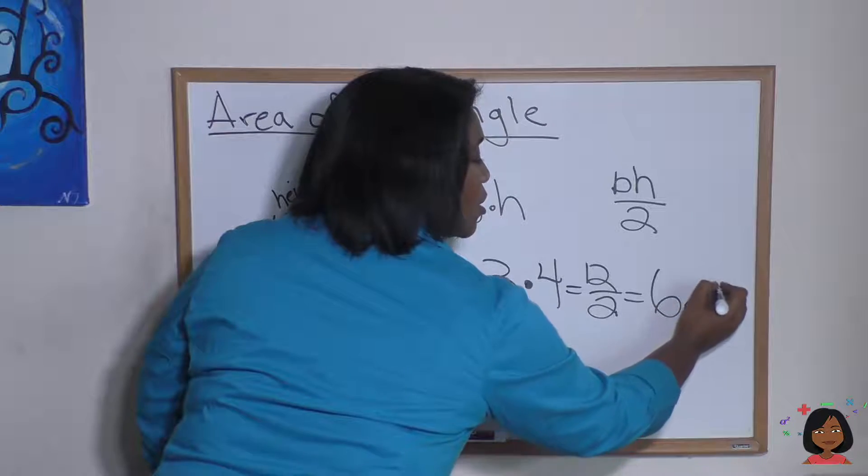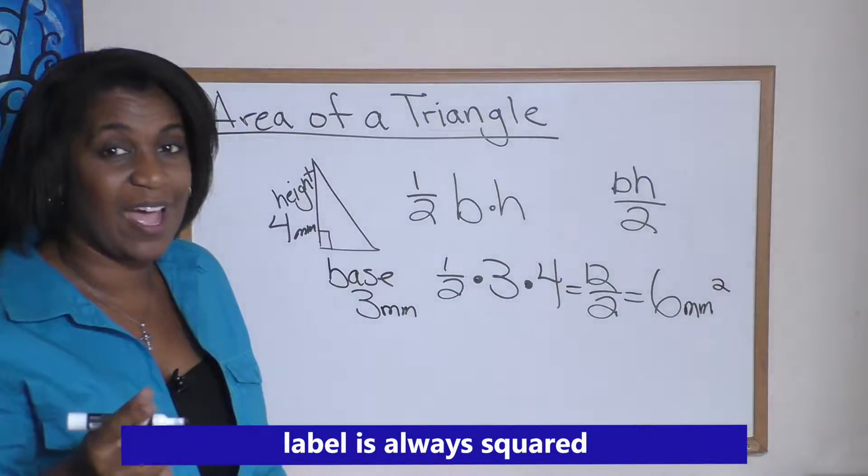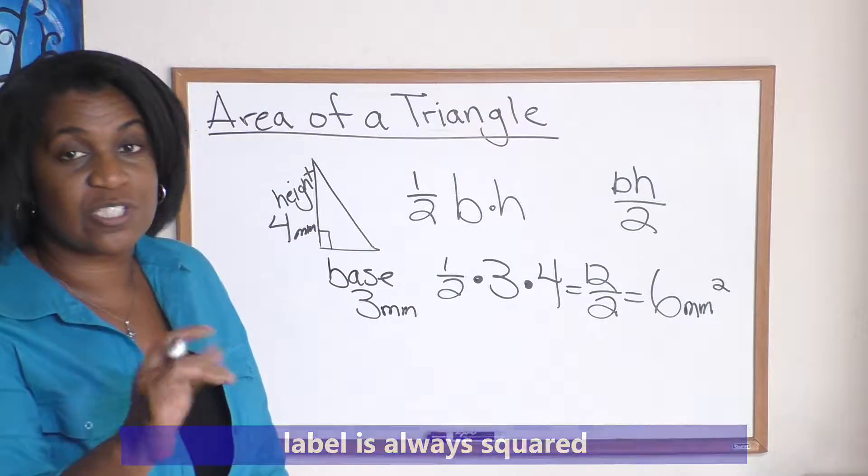So let me give you, I meant to tell you these were millimeters, so that means that our label is going to be millimeters squared. Just like when we did rectangular area, we always had a label squared, and you can say it either way: millimeters squared or square millimeters.